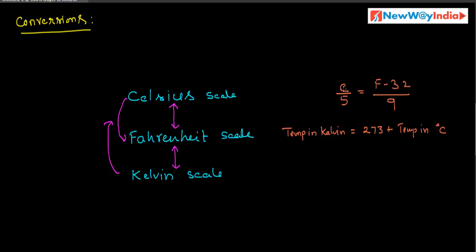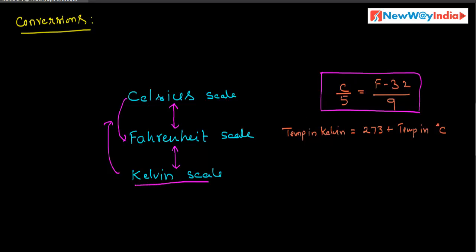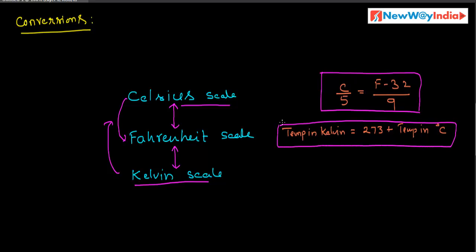The important formula between Celsius and Fahrenheit scale is: C divided by 5 is equal to F minus 32 divided by 9. This is the relation between Fahrenheit and Celsius scales. Next, the relation between Kelvin and Celsius: the temperature in Kelvin is equal to 273 plus the temperature in degree centigrade. These are the important relations between these scales.